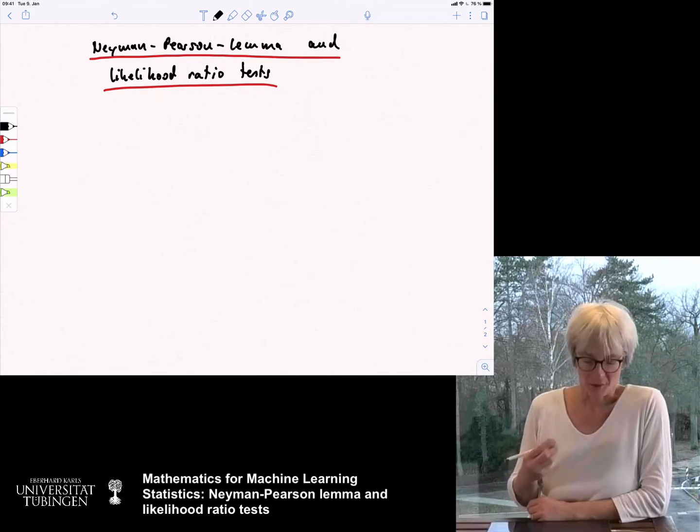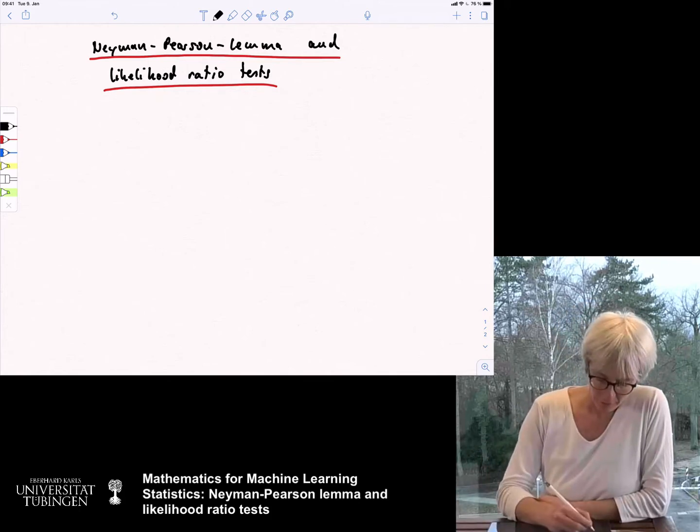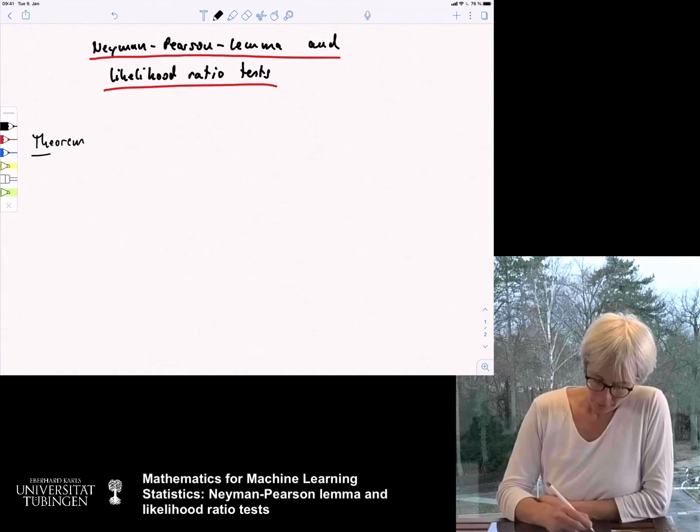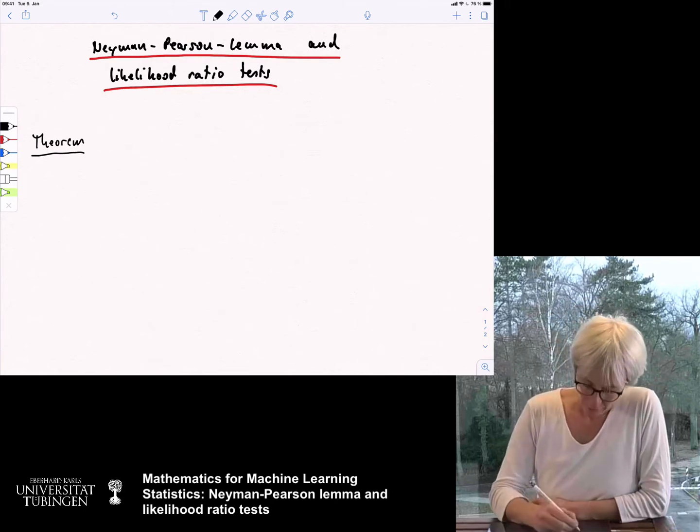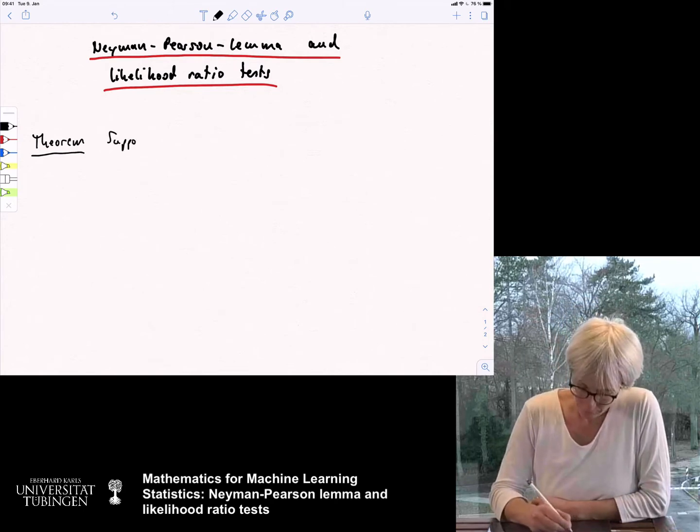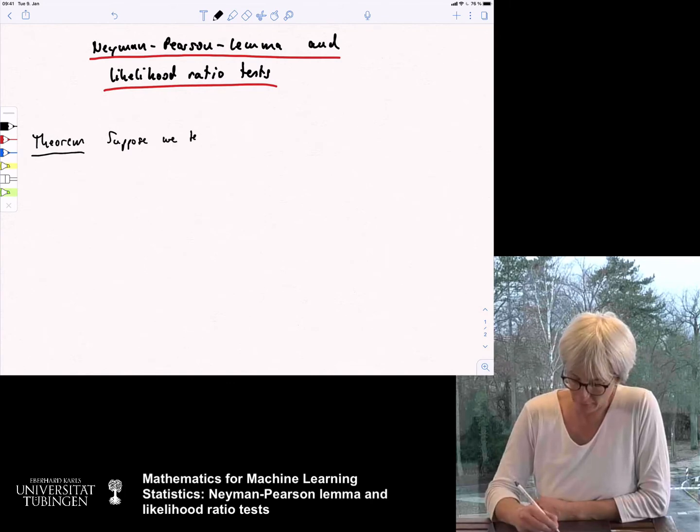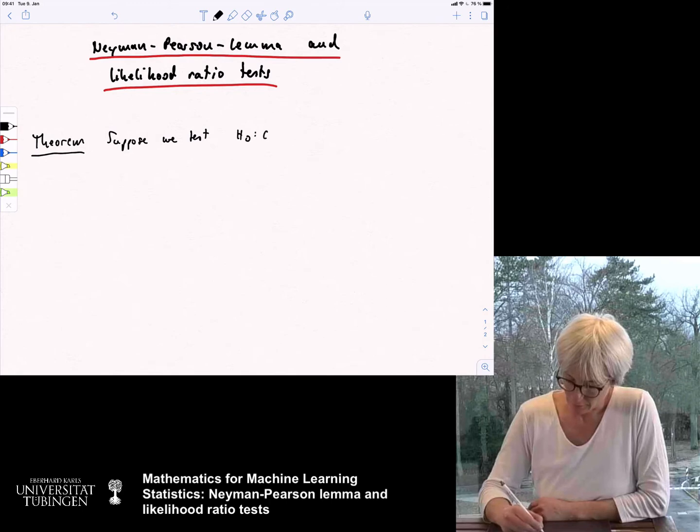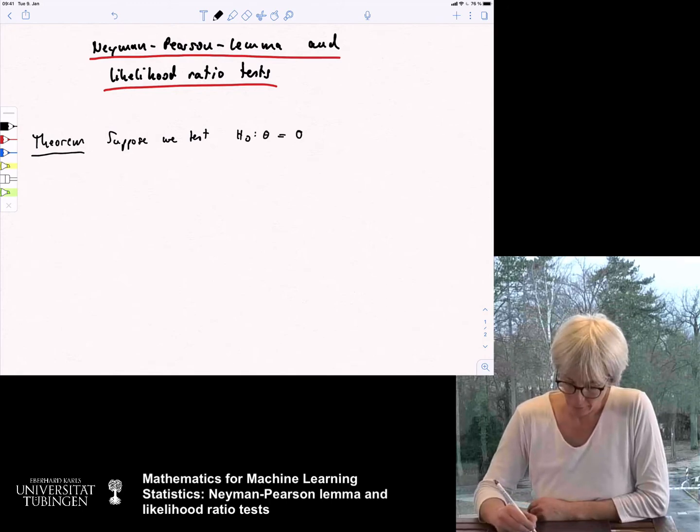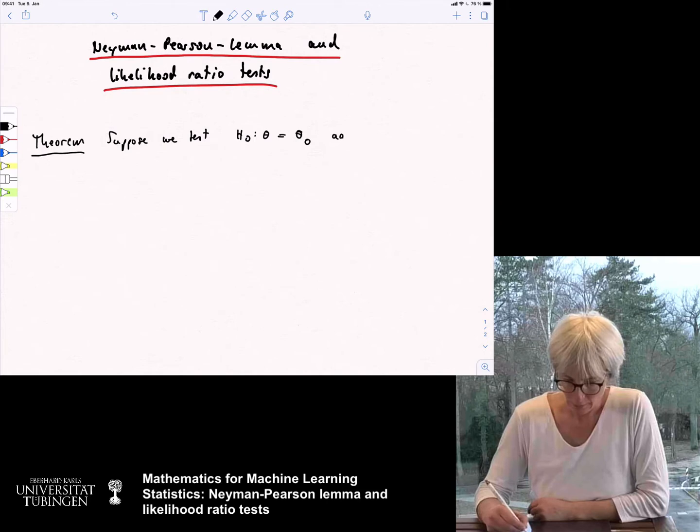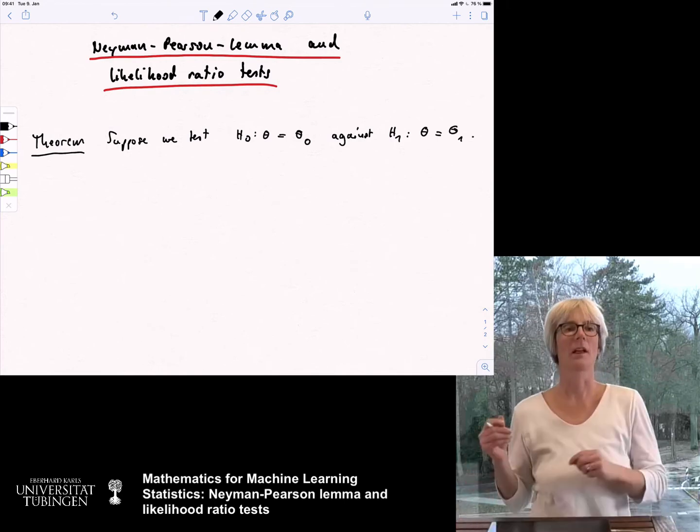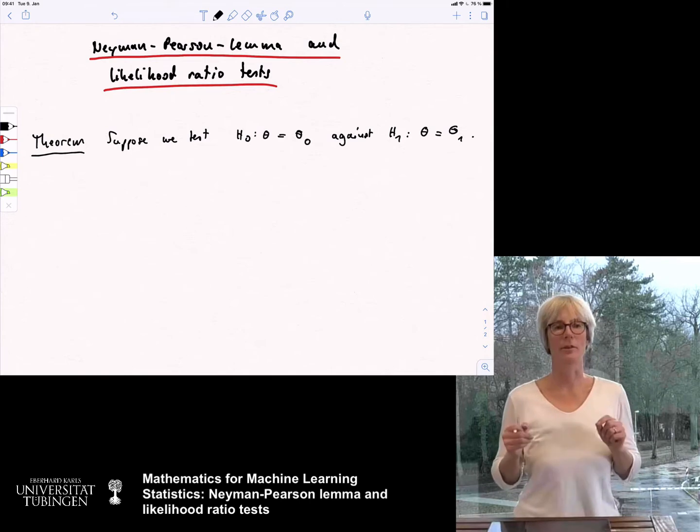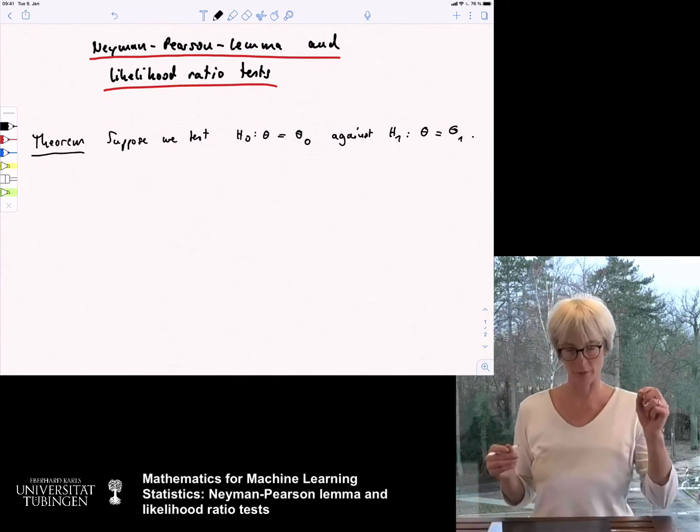So, first of all, I'm going to write down what the theorem is. Well, it's called a theorem now, even though in the literature this is called the Neyman-Pearson lemma, but I called it a theorem, I think it's a great statement. So, suppose we want to test a hypothesis h0, the parameter theta is theta 0, against h1, the parameter is theta 1. So, this is now a case where we test two simple hypotheses against each other.